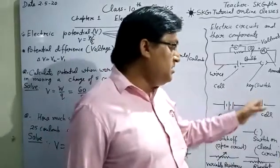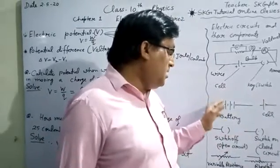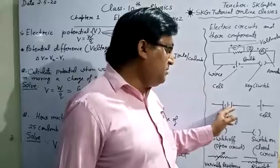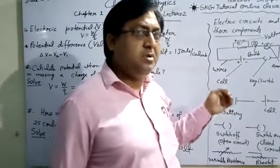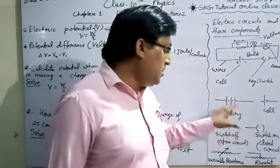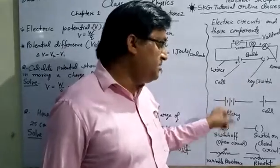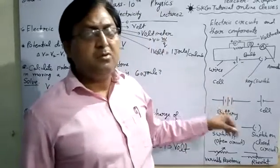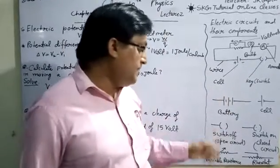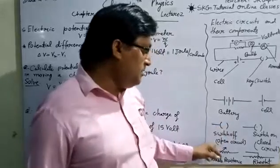If voltage of one cell is two volts, and there is combination of three cells, each cell having two volts potential difference, then total voltage, total potential difference of this battery will be 6 volts. This is symbol of switch off, open circuit.